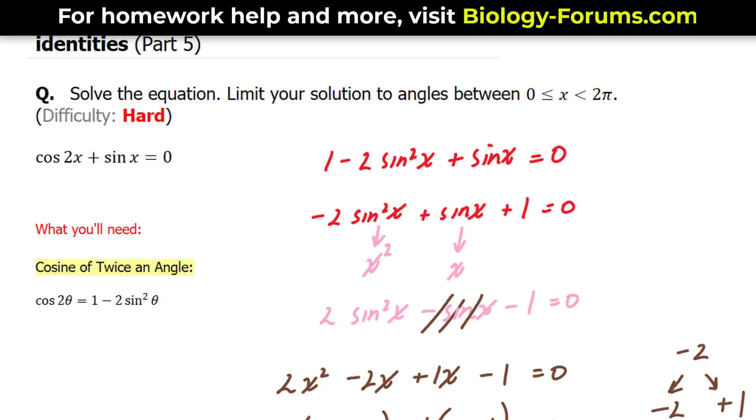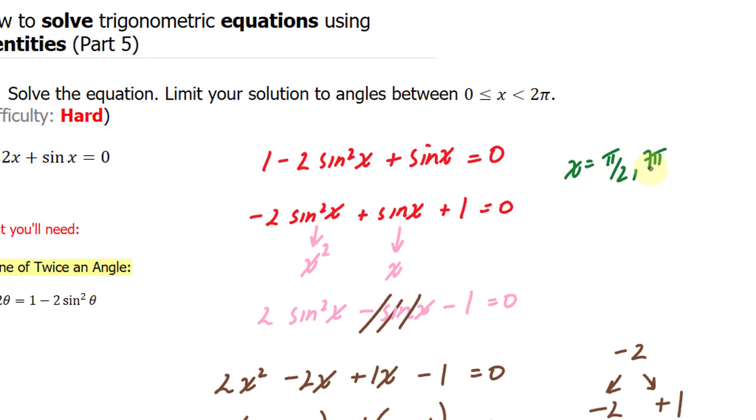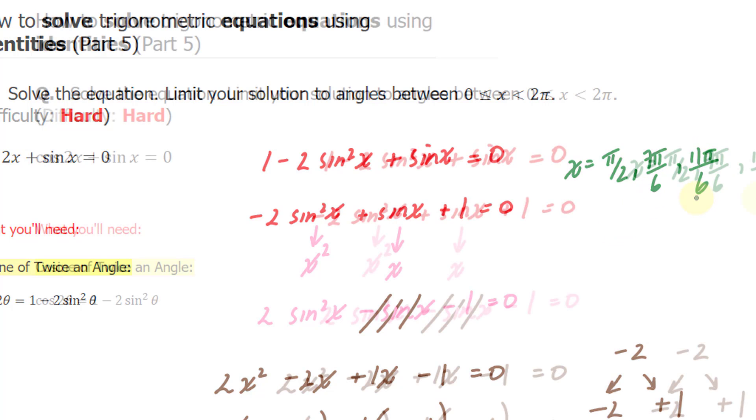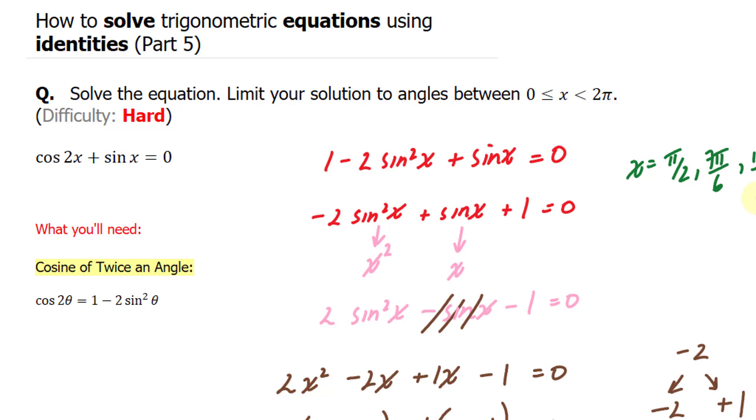The three angles for our equation are pi over two, seven pi over six, and eleven pi over six. That is how to solve trigonometric equations using identities, radian angles, and special triangles.